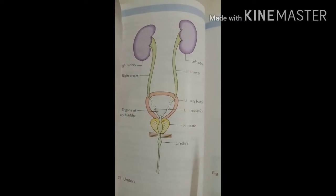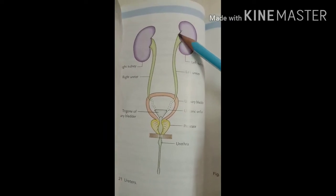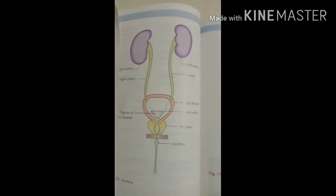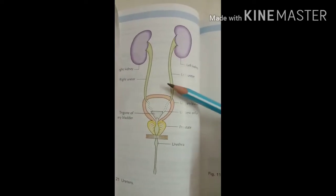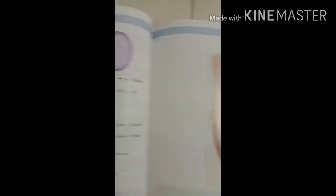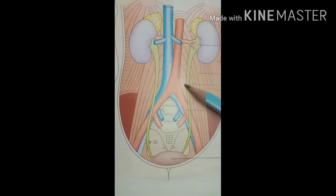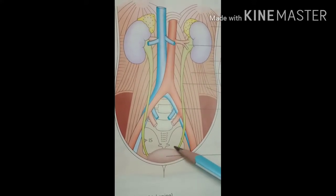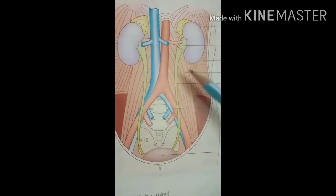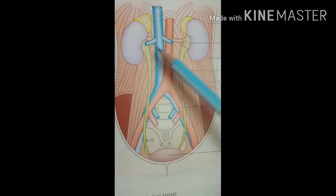Out of the total 25-centimeter length, the upper half of the ureter is present in the abdomen and the lower part is present in the pelvis. In this diagram, the ureter is shown in green. The posterior abdominal wall is visible here, and it is made up of four muscles. The vertical fibers represent the psoas major and psoas minor muscles.